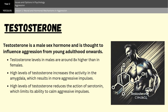Finally, we have testosterone. Testosterone is the male sex hormone, and testosterone levels are typically eight times higher in males than in females. It is responsible for the development of characteristics typical of males — such as muscle mass and body hair. Psychologists are more interested in the behavioral changes that result from testosterone, one of which is aggression. Testosterone is thought to influence aggression from young adulthood onwards due to its action on areas of the brain involved in controlling aggression, such as the amygdala and serotonin levels. High levels of testosterone are linked to both increased activity in the amygdala, resulting in more aggressive impulses, and reduced activity of serotonin, which limits its ability to calm aggressive impulses.